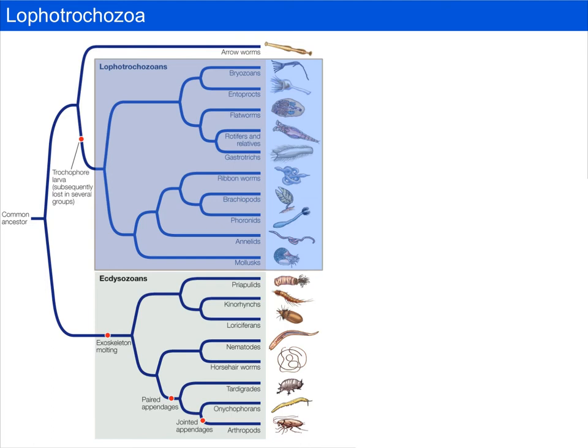If we zoom in on the protostomes we can see that they're divided into a couple of main groups: one is Ecdysozoa and the other is Lofotrochozoa. Lofotrochozoa is the focus of this video. Lofotrochozoans include lots of different groups, some of which you're probably not all that familiar with, but some should stand out — namely the annelids and the mollusks.